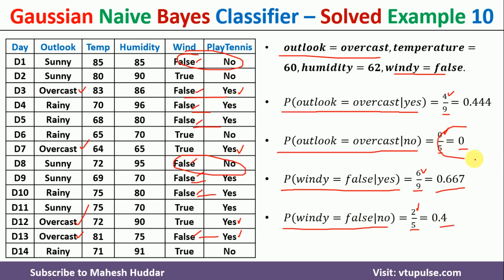However, the probability of 0 is not acceptable in the Naive Bayes classifier, because if you multiply 0 with anything you will get 0 as the posterior probability. This is also called the zero probability problem in the Naive Bayes classifier. How to handle this zero probability issue has already been discussed in detail — the link for that video is given in the description below.